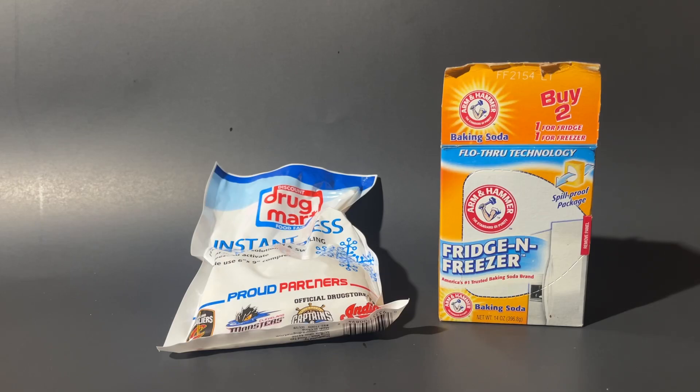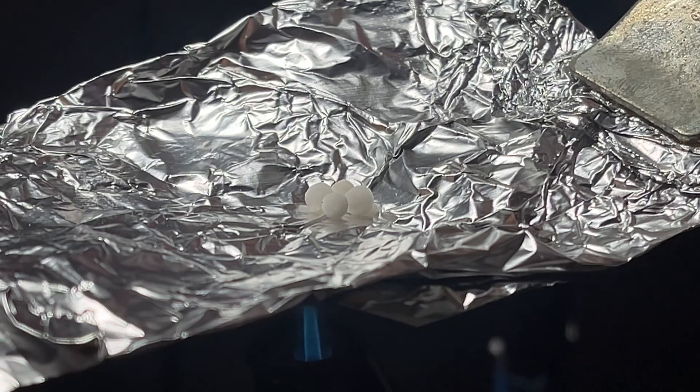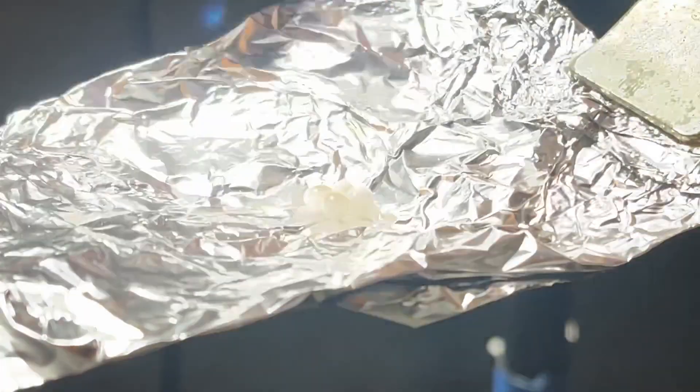To start off, what I'll need is sodium bicarbonate, or more commonly known as baking soda, and I'll also need ammonium nitrate, which can be found in America as cold packs. And if you don't live in America, you probably can't find it because of its use in explosives.